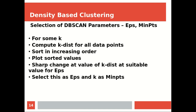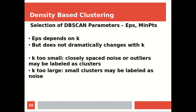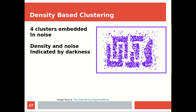You sort the k-distance values into increasing order, plot them, and identify the sharp change — this value becomes your EPS. EPS will depend on K, but it will not dramatically change with K. If K is small, closely spaced noise in dense regions will be included in clusters. If K is large, small clusters may get marked as noise.